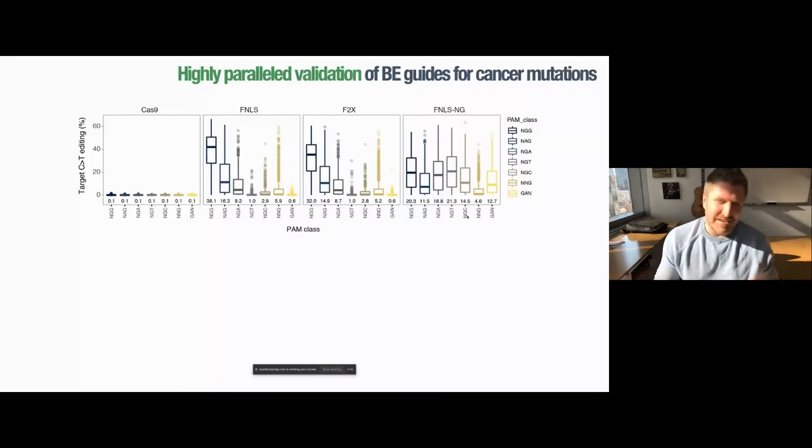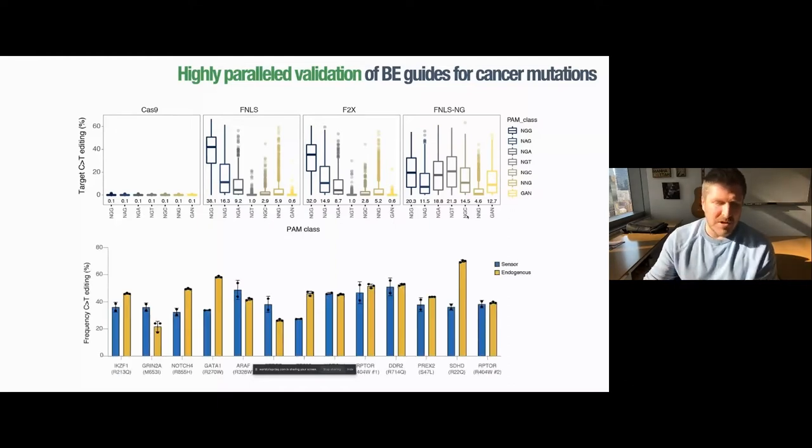Of course, none of this is really useful at all, unless the editing site at the sensor recapitulates what's happening at the endogenous locus. We took a number of examples from our data set and went and one by one tried to engineer these same mutations at the endogenous genomic site. This is data from PC9 cells. You can see in most cases, in more than 50% of these cases, the efficiency of editing at the sensor site is within about 10% of the endogenous site. And those that are not, more often than not, show higher levels of editing at the endogenous site than at the sensor site. So overall, we feel like we're predicting pretty accurately the efficiency of these guides. And certainly within a number of guides that are targeting the same region, the ranking of those guides, while maybe different cell line to cell line, stays pretty consistent.